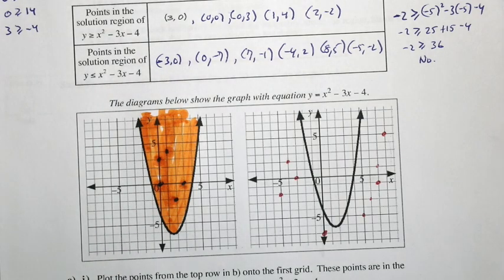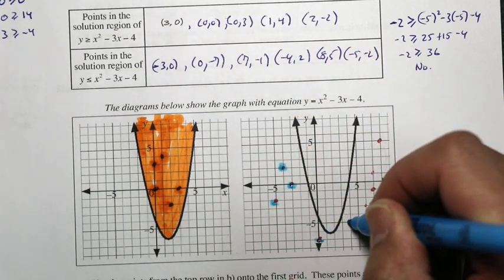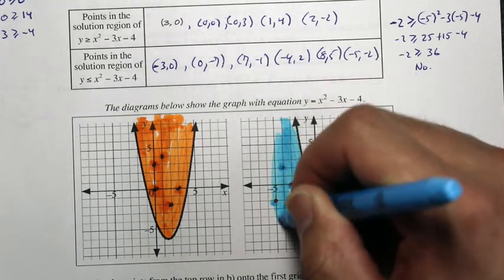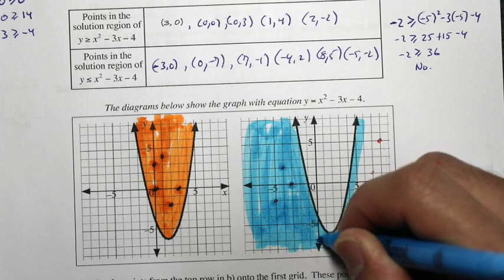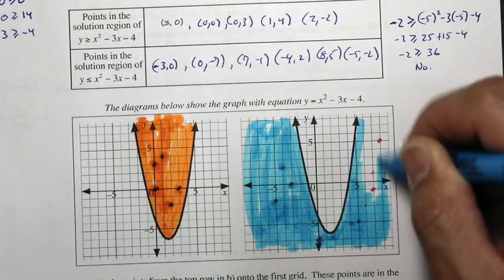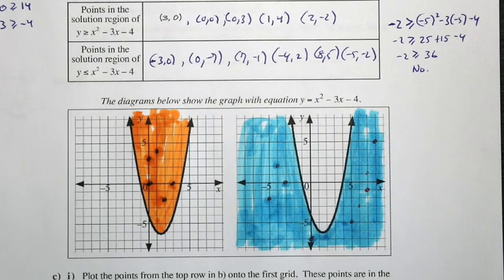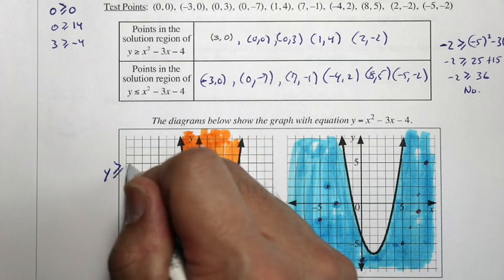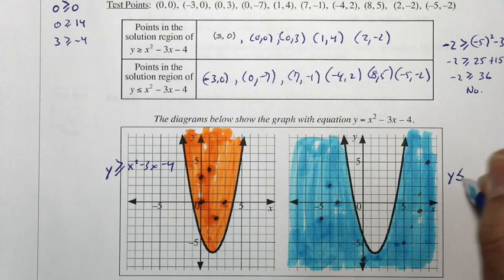Using a different color to shade the other region — you have that point there, and that point there, following this line here, shading all this region, and so on. Everything underneath, underneath, and it continues to go up following that line. This is your y greater than or equal to x squared minus 3x minus 4 on one side, and y is less than x squared minus 3x minus 4 on the other.